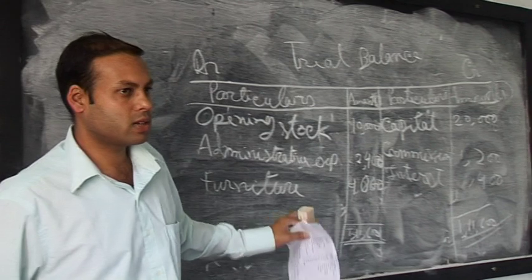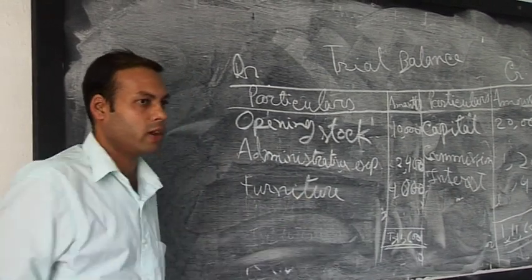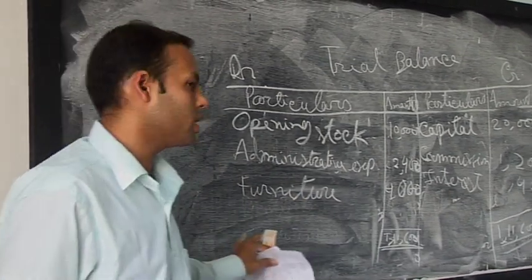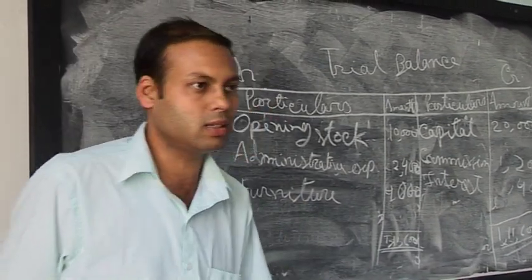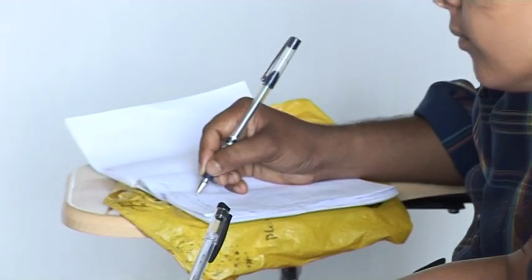Our main purpose starts now — we are going to prepare the final account, that is the trading account, profit and loss account, and balance sheet. Drawings: as per the business entity concept, the businessman and the business are treated as separate parties. Drawings refers to the amount of cash withdrawn from the business for personal use of the owner.